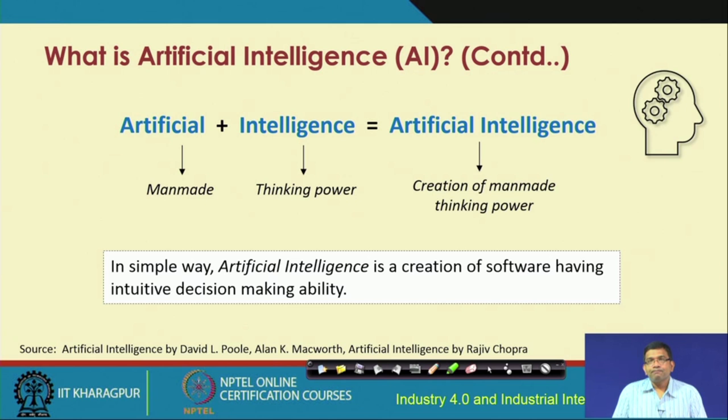In simplistic form, AI is a creation of software having intuitive decision-making capability. Remember that AI systems are typically software-based, but in the industrial sector and many other domains, these AI-based software will have to work on some kind of hardware. So you cannot basically leave hardware completely separated when you are talking about AI systems holistically.